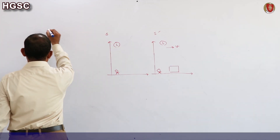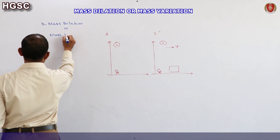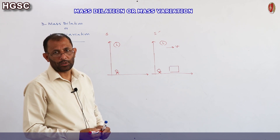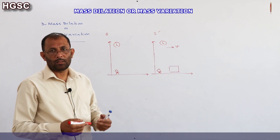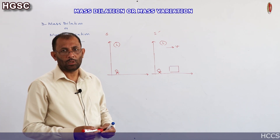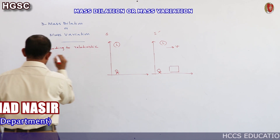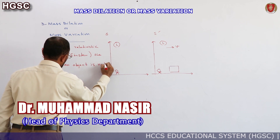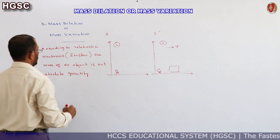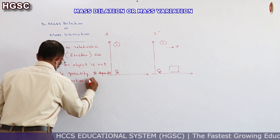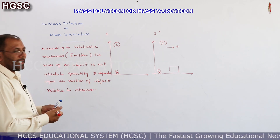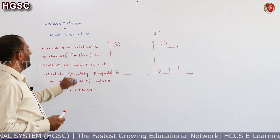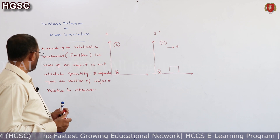The next result is mass dilation, also called mass variation. According to Einstein, mass is not an absolute quantity. The mass of an object depends upon the motion of the object relative to the observer. According to relativistic mechanics — that is, the special theory of relativity — the mass of an object is not absolute; it depends on the motion of the object relative to the observer.